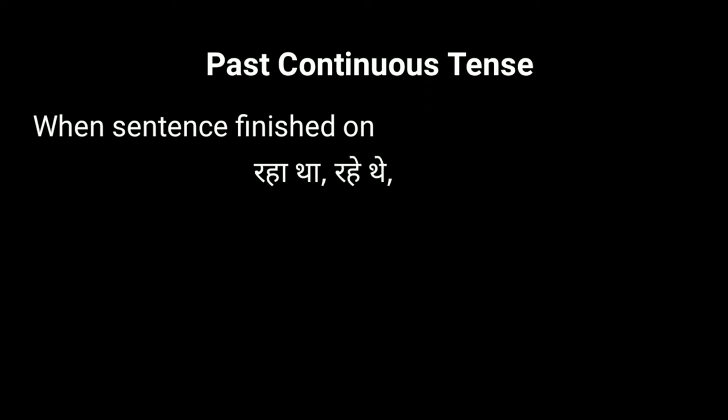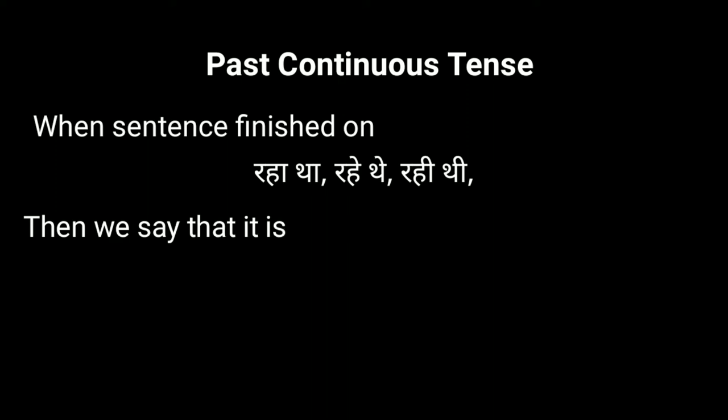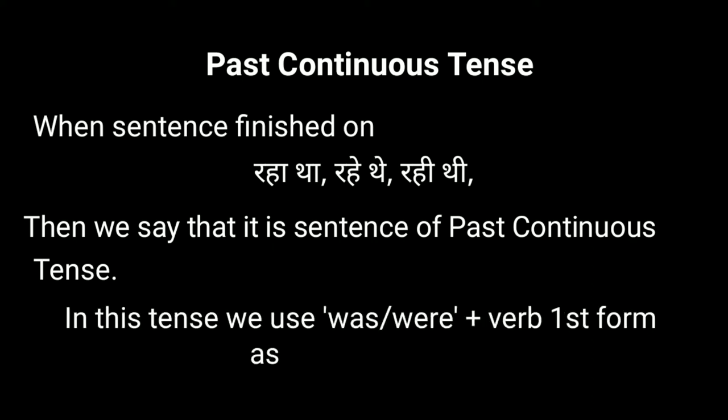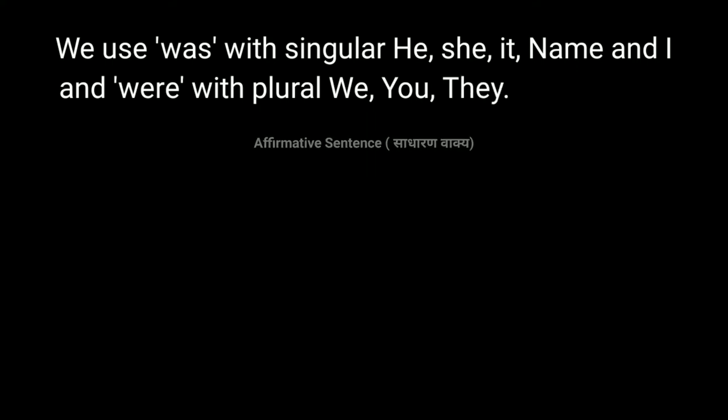When a sentence ends on 'raha tha', 'rahe the', or 'rahi thi', then we say it is a sentence of past continuous tense. In this tense we use 'was' or 'were' plus verb first form as a helping verb. We use 'was' with singular subjects — he, she, it, name, and I — and 'were' with plural subjects — we, you, they.